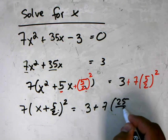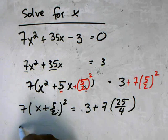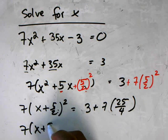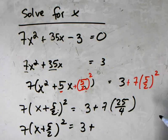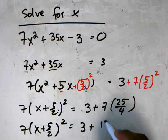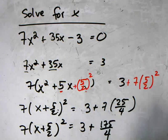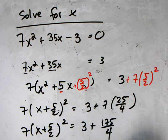This is 3 plus 7 times 25/4, so (x + 5/2)² = 3 + 7 times 25 is 175, so 175/4. I'm just going to simplify this a little bit better.